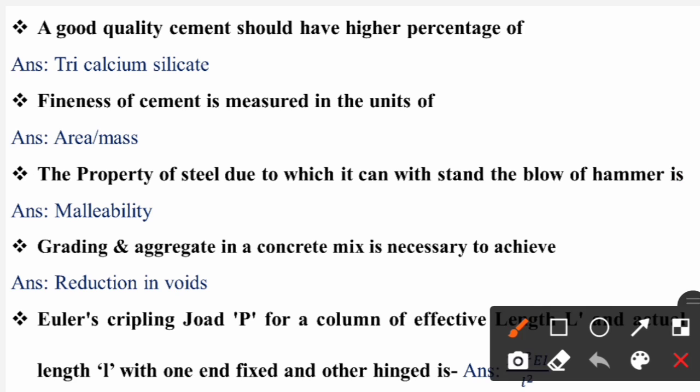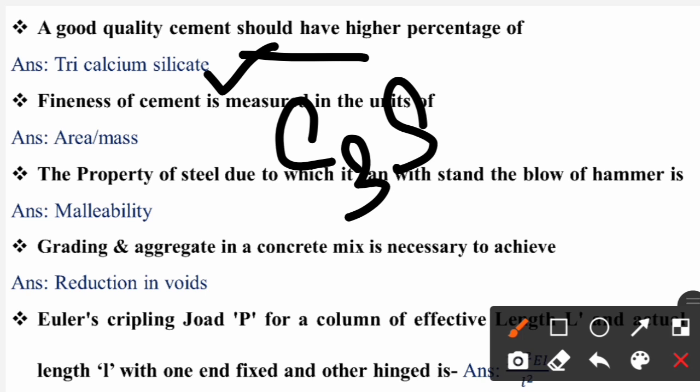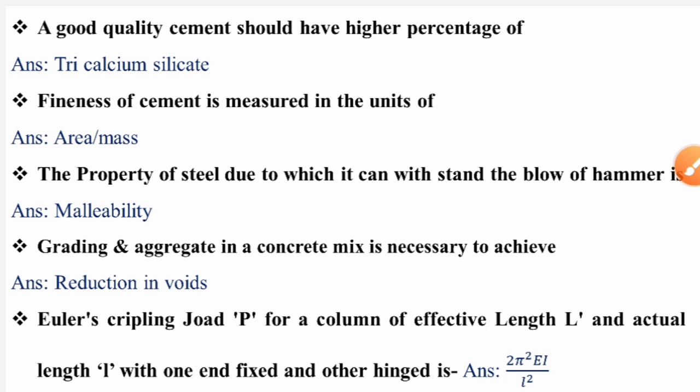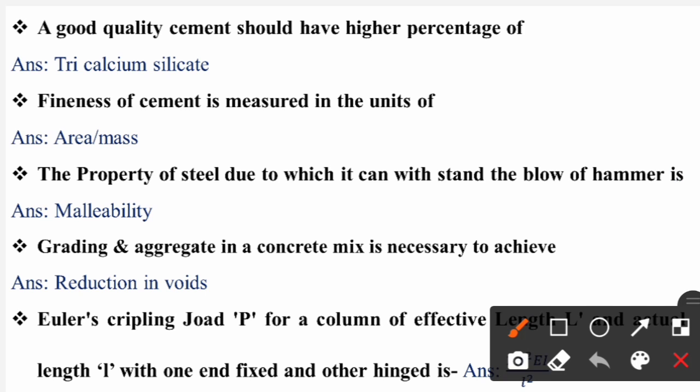The first question says: A good quality cement should have a higher percentage of what? The correct answer is tricalcium silicate, or C3S. A good quality cement should have maximum C3S content.